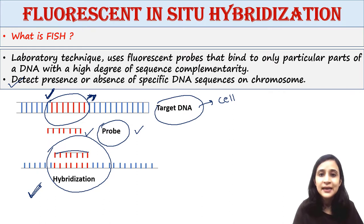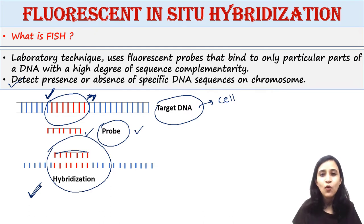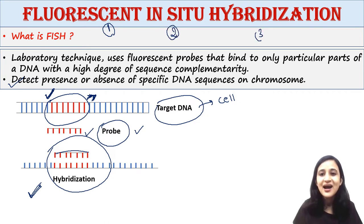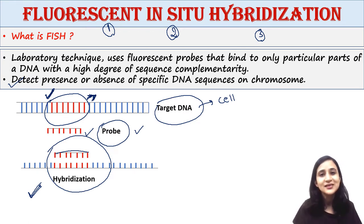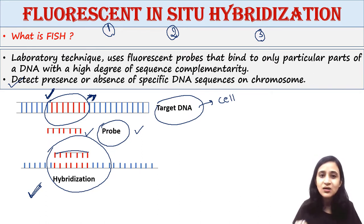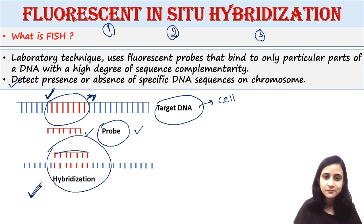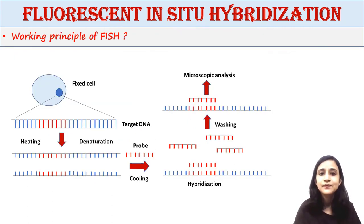Now, fluorescent in-situ hybridization consists of three words: fluorescent, in-situ, and hybridization. It is called fluorescent because we use a fluorescent probe. In-situ means we are placing this probe inside the cell — whatever occurs inside a cell we call in-situ. And hybridization because the probe hybridizes with the target sequence of DNA.